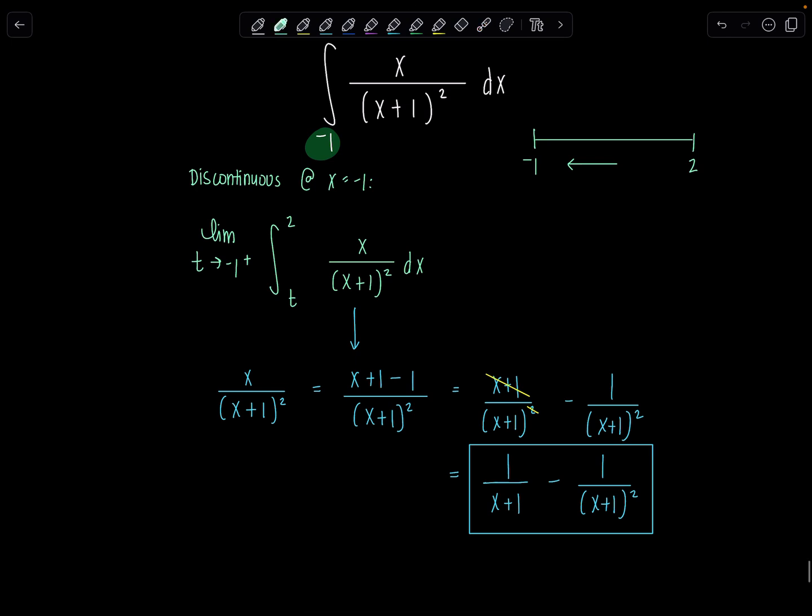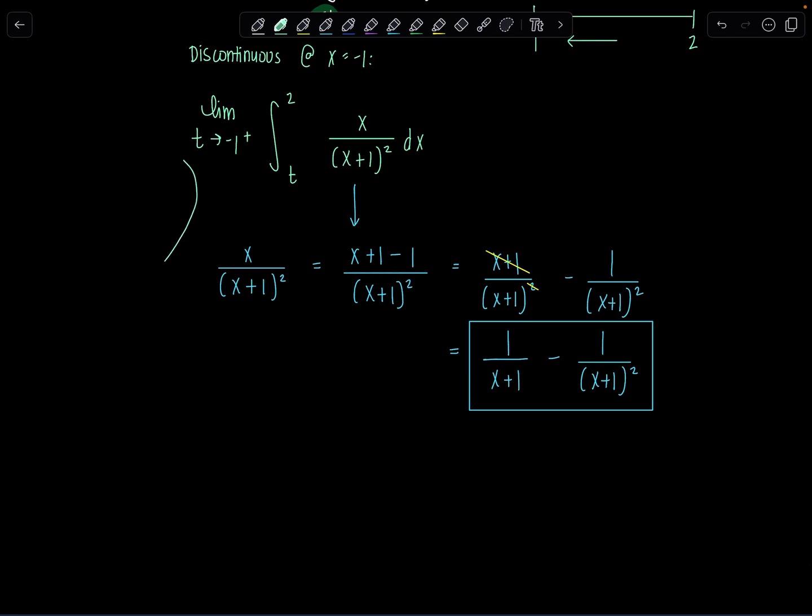Anyways, now let's rewrite our integrand using, this is the partial fraction decomposition that we found. The limit as t approaches negative 1 from the right, integral t to 2. You have to write all of that every step, okay? And then we have 1 over x plus 1 minus 1 over x plus 1 quantity squared dx.